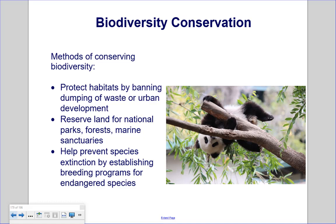Methods of conserving biodiversity include protecting habitats by banning dumping of waste or urban development, reserving land for national parks, forests, and marine sanctuaries, and helping prevent species extinction by establishing breeding programs for endangered species.